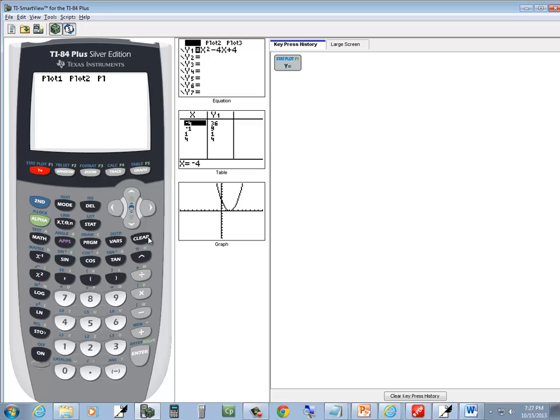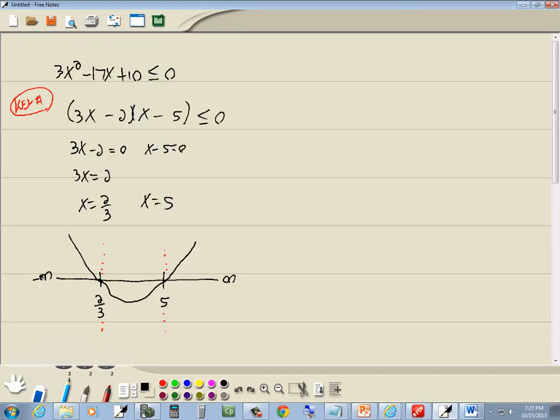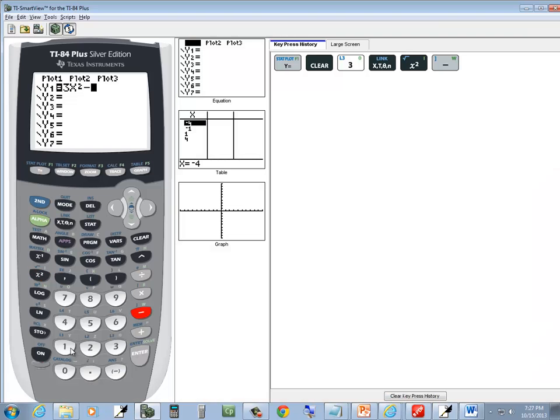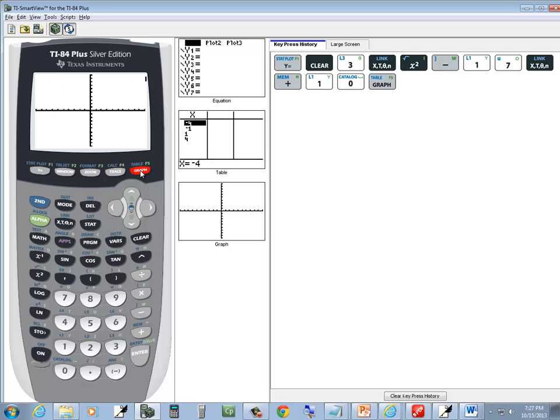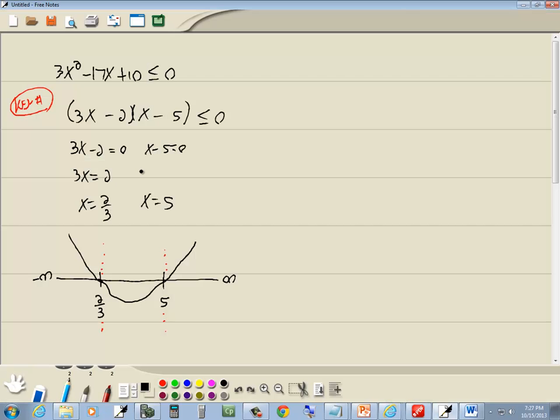So, if I press y equals, press clear, we've got 3x-squared, minus 17x, plus 10, and then graph. And you can see what I just indicated. It opens up, passes through our critical values.